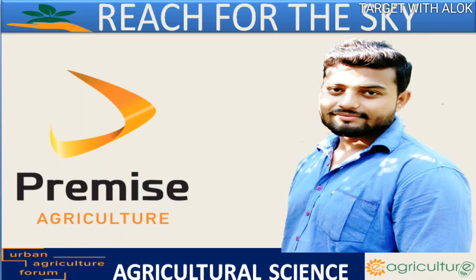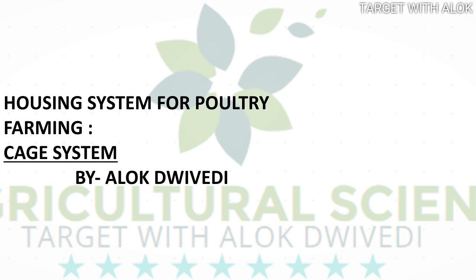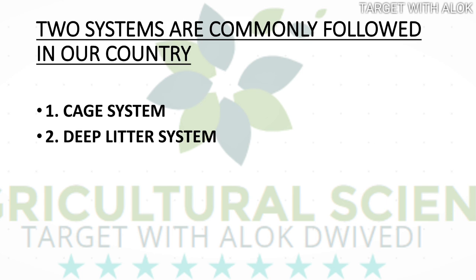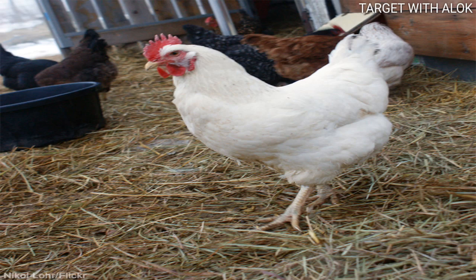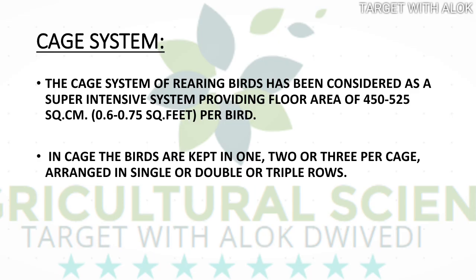Hi dear friends, welcome to my channel Agricultural Sciences with Alok Divedi. Today we will discuss a topic: housing systems for poultry farming. Two systems are commonly followed in our country — the cage system and the deep litter system. This is an example of the deep litter system, showing how the hens are kept. In this session, we will discuss only the cage system.